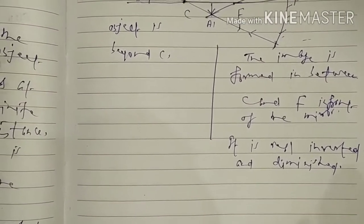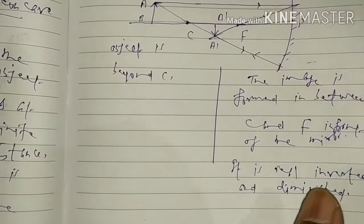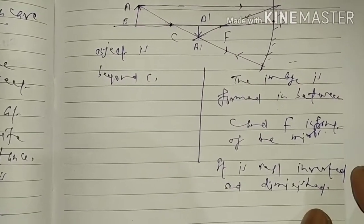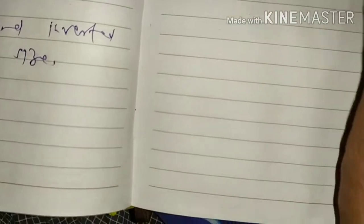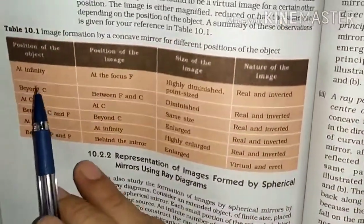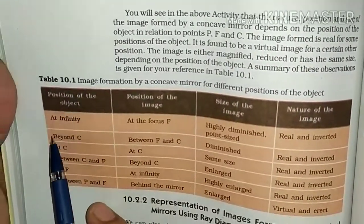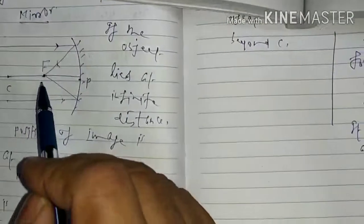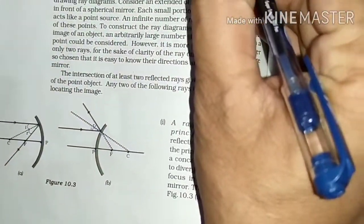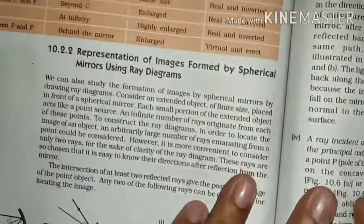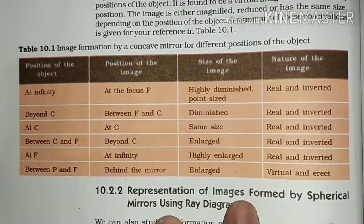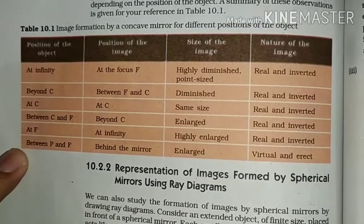One thing is very important here. You will see that in all six cases, the distance of the object, distance of the image, nature, and position are already tabulated in table 10.1. In the first case, position of the object is at infinity, position of the image is at focus, size of the image is highly diminished, and its nature is real and inverted. I shall not write all these things again — just trace the images, and all the information is given in table 10.1 from position 1 to position 6.